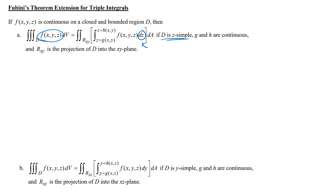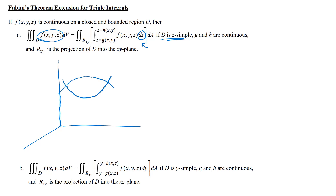We're going to use dz if our region D is z-simple. The idea with z-simple is an extension of what it means for a region to be x-simple or y-simple from two dimensions to three. For example, imagine two paraboloids — one opening up and one opening down — intersecting at some edge, giving one paraboloid on top and another on the bottom.